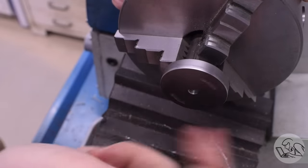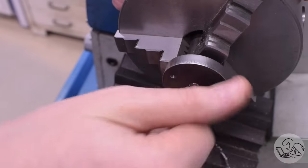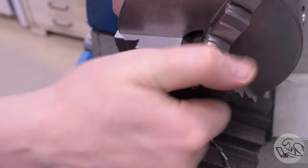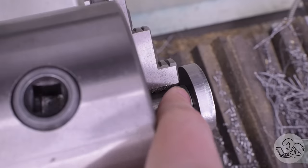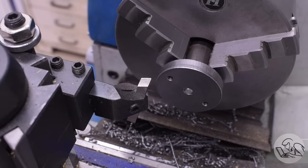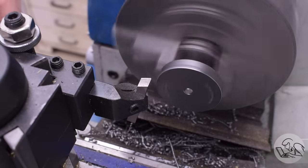There's the completed threaded mandrel. Now I can thread the disc on there and of course because it's a right-hand thread the direction of the cutting forces on the lathe will only serve to tighten it on there. You can see it's nice and tight against that shoulder as well because of that undercut. All right away we go.